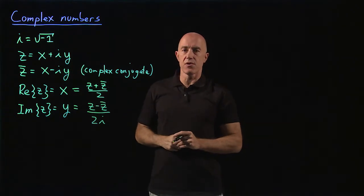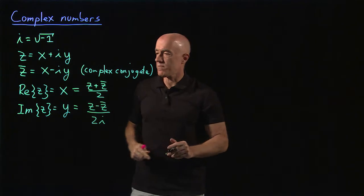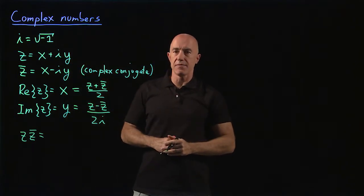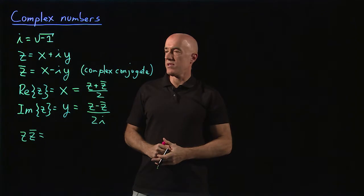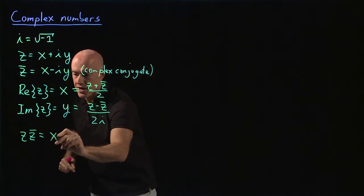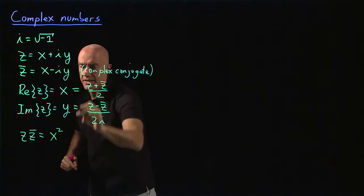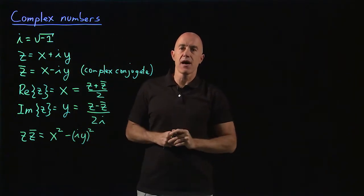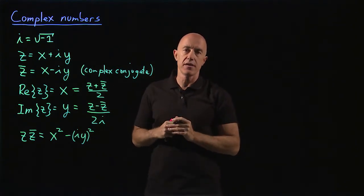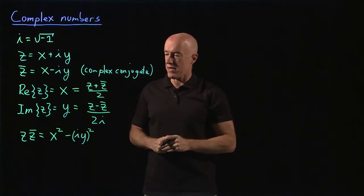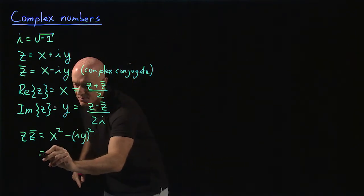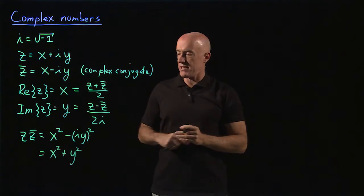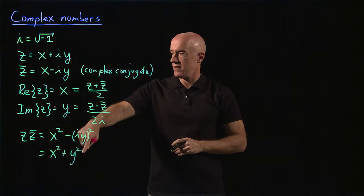Z and z-bar are useful in one more way. If you multiply them — z times z-bar — that's (x + iy)(x − iy). The cross terms cancel, giving x² minus i²y². Since i² equals minus one, that simplifies to x² plus y², which is the real part of z squared plus the imaginary part of z squared.